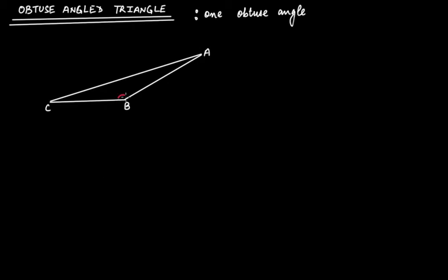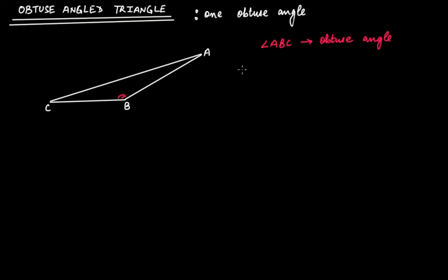I hope you have figured it out. Angle ABC is clearly an obtuse angle. Since this triangle contains an obtuse angle, it is called an obtuse angle triangle.